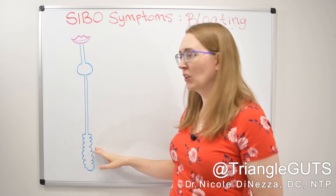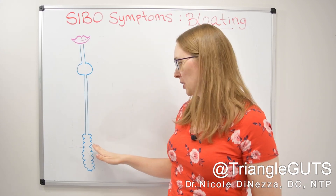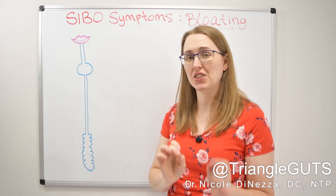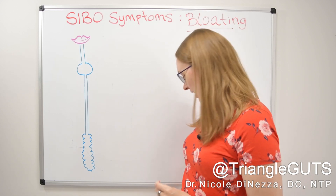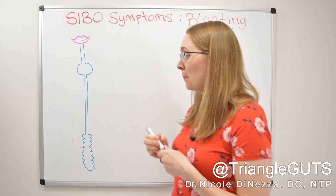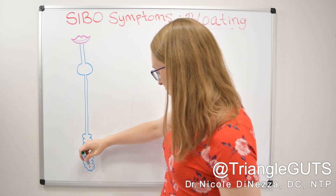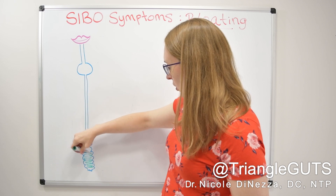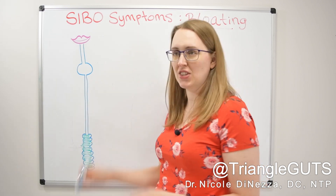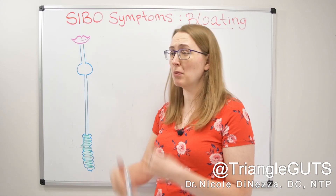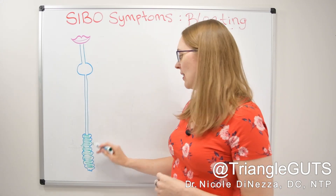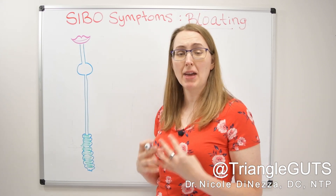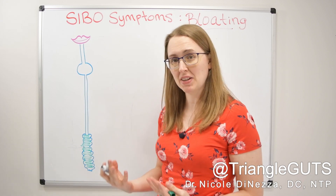Then finally we get to the colon — aka the bacteria frat house — where the bacteria have a jamboree munching up everything that you were not able to digest and absorb yourself. The colon is chock full of bacteria, yeast, some parasites, viruses, methanogens, and that is perfectly normal. The colon was made to expand and contract, and it was made to accommodate those gases and microbial metabolites.